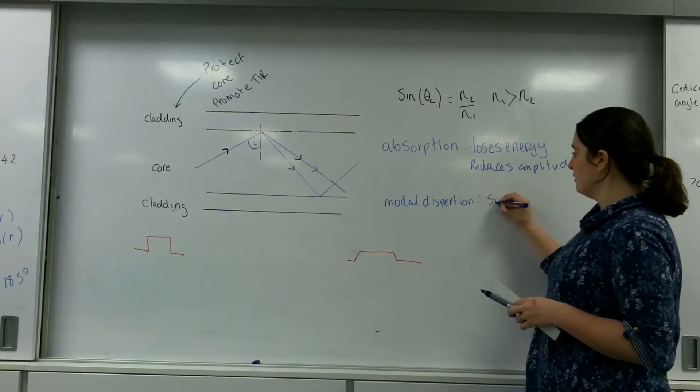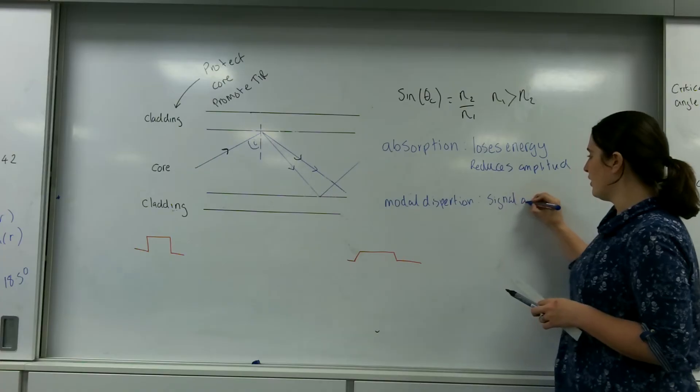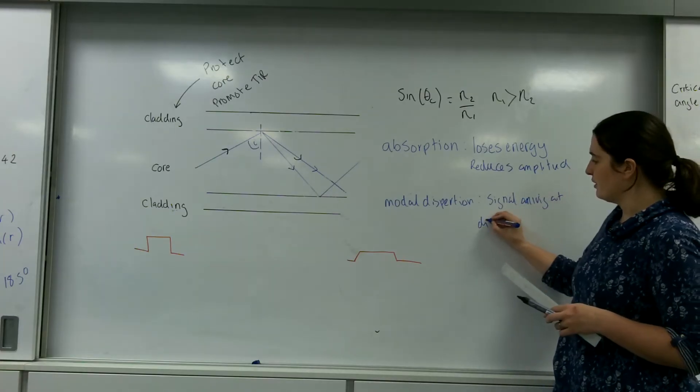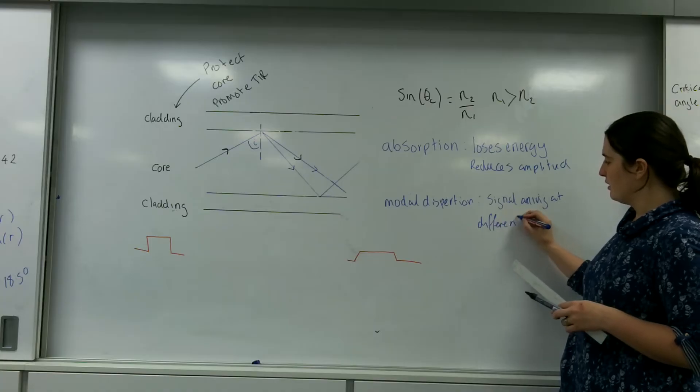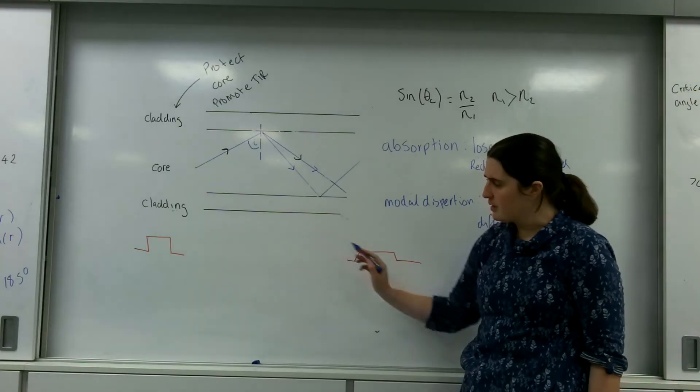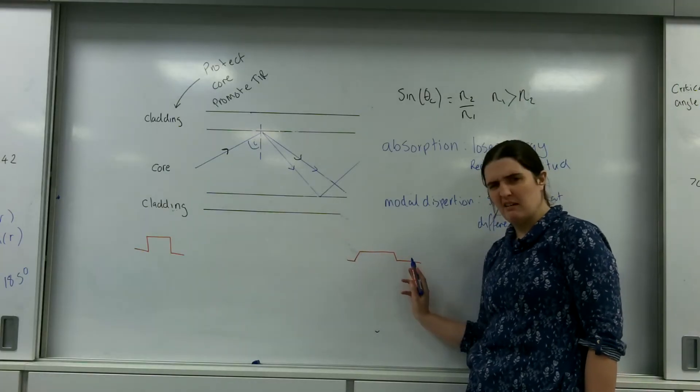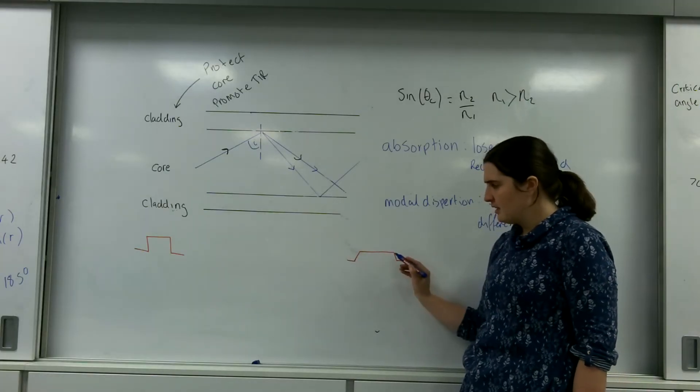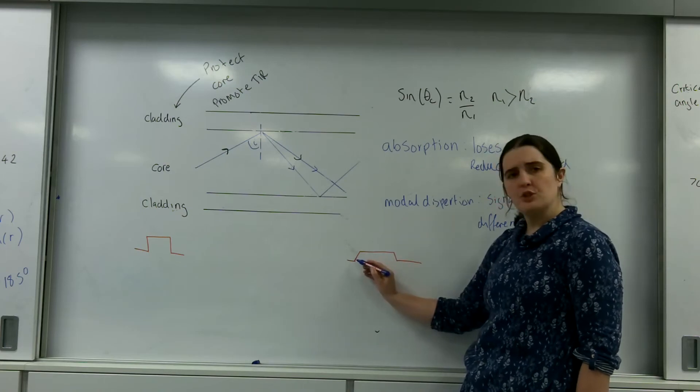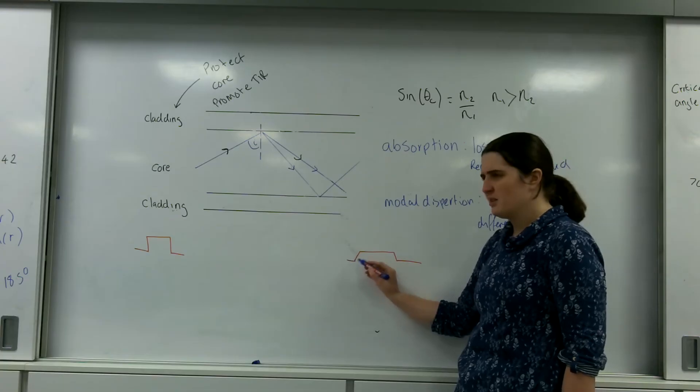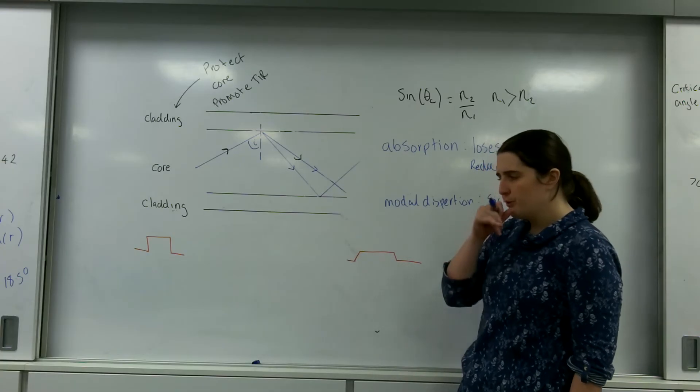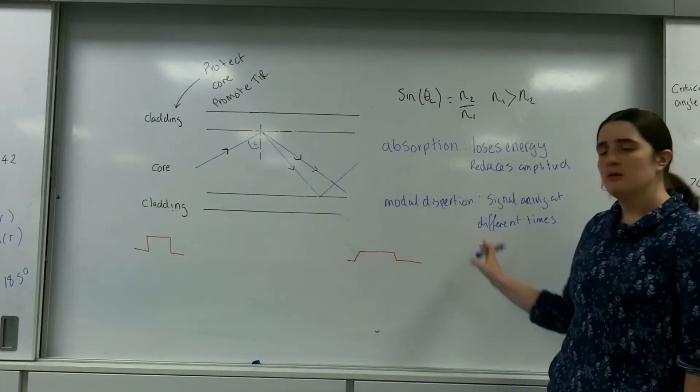And that is all to do with signal arriving at different times. And this is what it does to the signal. Can you see at the front I've got nice straight lines. I've got these kind of like wobbly bits here. They're kind of slanted. So not only have I lost energy due to absorption, but my signal is not as clear and defined. My signal sort of isn't on or off, it's this in-between state. And it's all to do with modal dispersion.